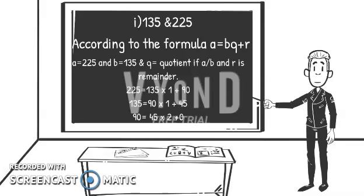Now if we follow this formula, we will get the first set which is 225 equals 135 times 1 plus 90. Then we use this formula again until we get R as 0. The next set will come as 135 equals 90 times 1 plus 45.